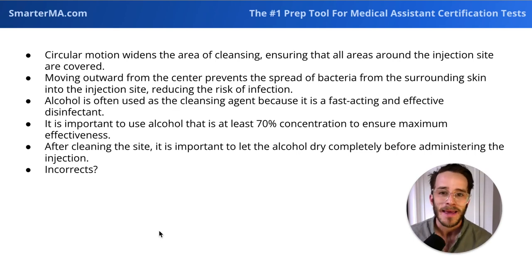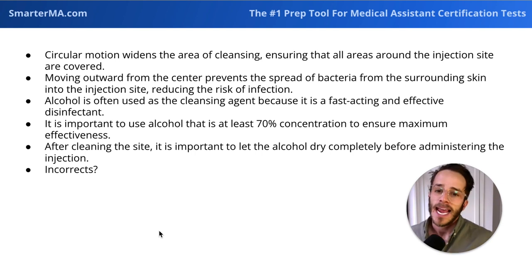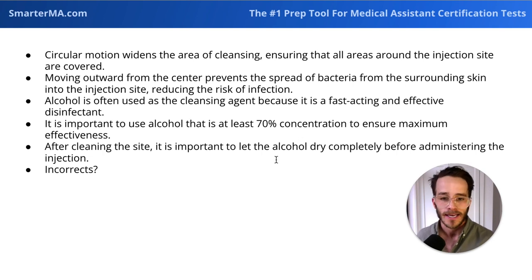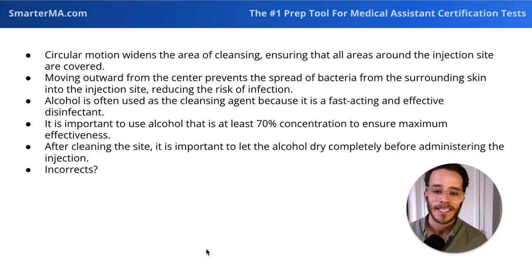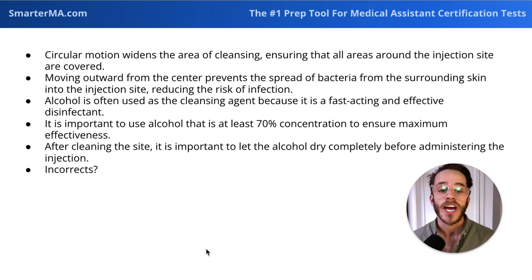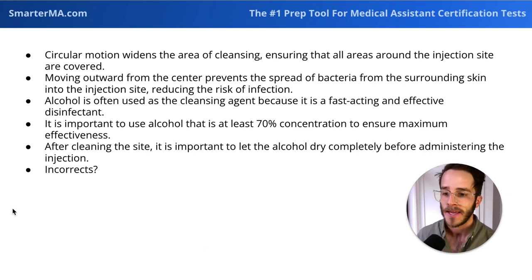Isopropyl alcohol is the main cleansing agent used for this. Importantly, the alcohol swab needs to have at least 70% alcohol — that's a high-yield point that comes up on tests. Also high yield: after cleansing the site, you need to let the alcohol dry completely before giving the injection to ensure everything has been disinfected properly.